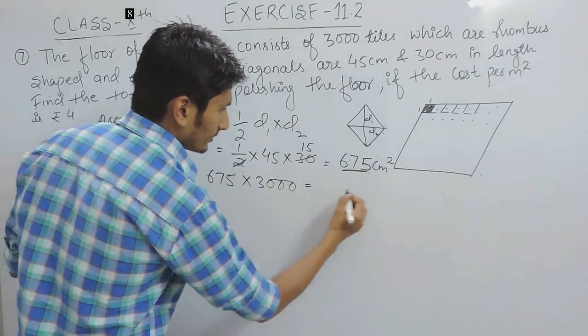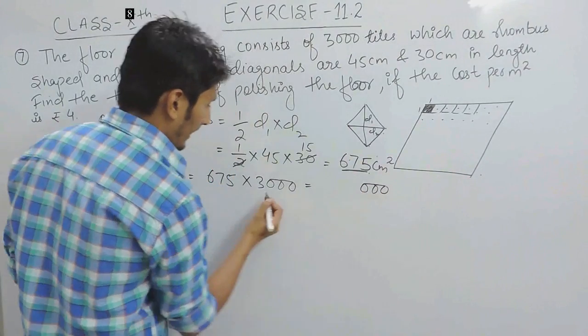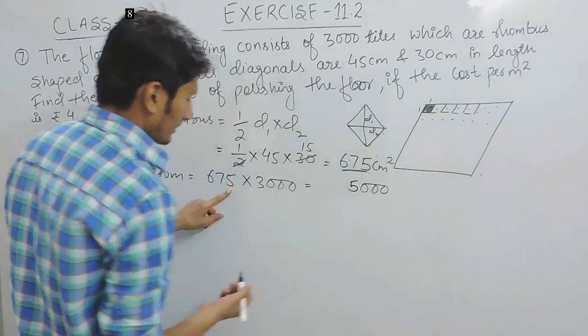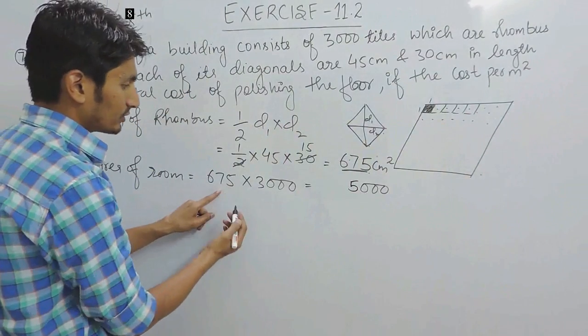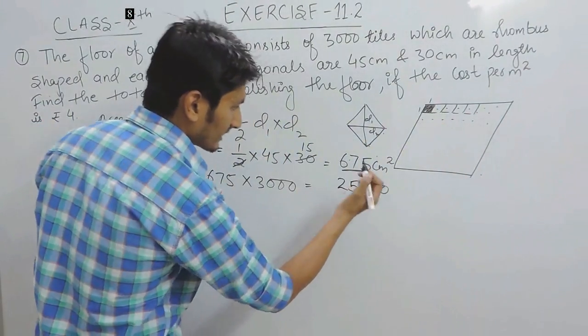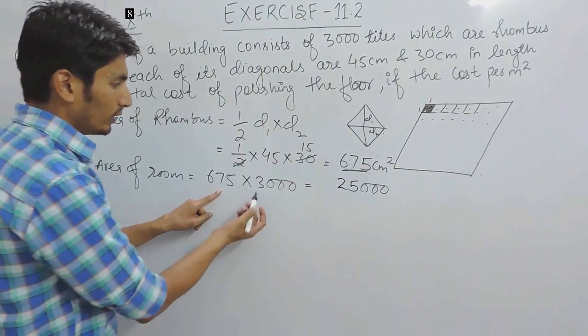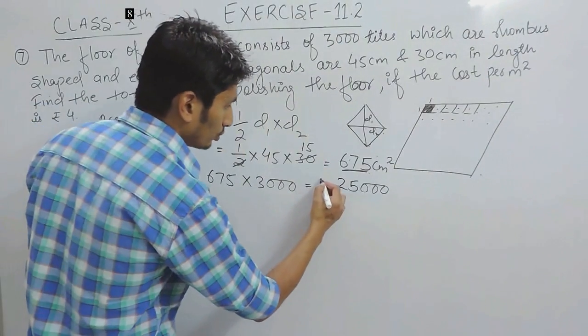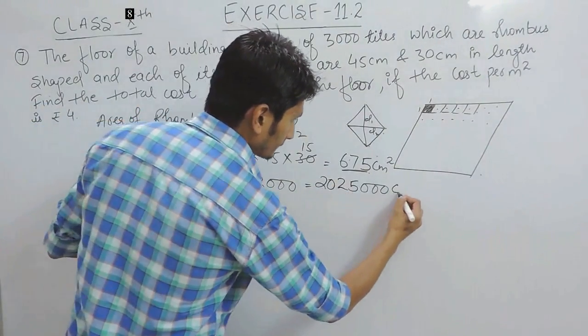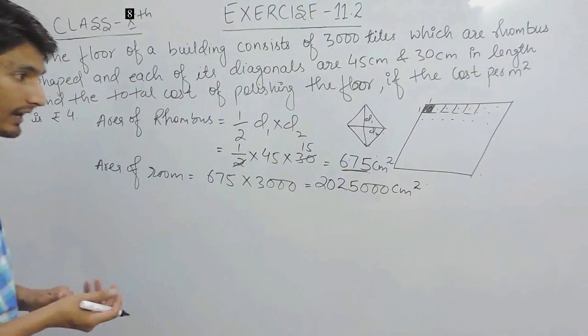This will be 30, and 3 multiplied by 5 is 15, carry 1, 7 threes are 21 and there was a carry so that would be 22, and 6 threes are 18 and 2, this will be this cm2.